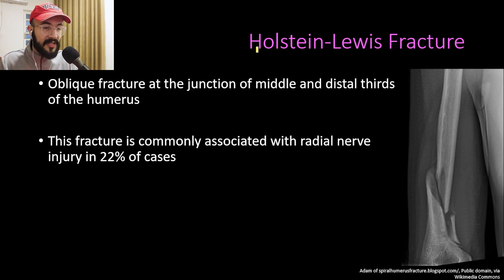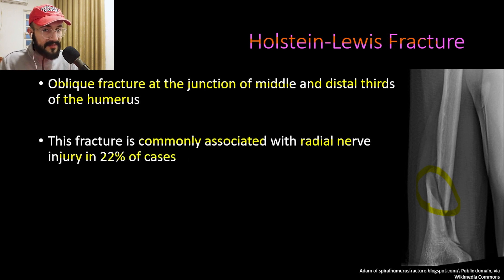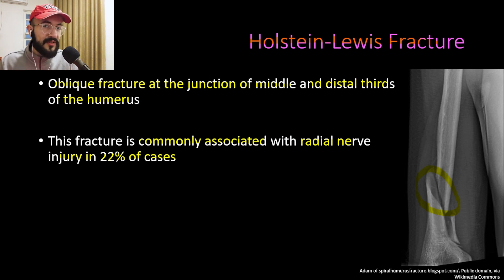It is important to highlight a special type called the Holstein-Lewis fracture, which is an oblique fracture at the junction of the middle and distal thirds of the humerus. This fracture is commonly associated with radial nerve injury in 22 percent of cases, compared to 10 percent in other types of humeral shaft fractures.